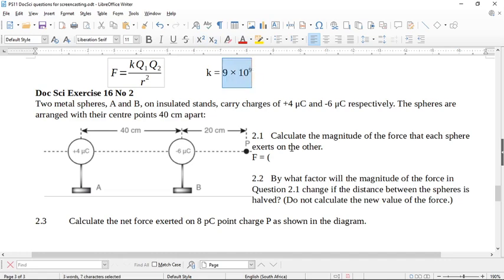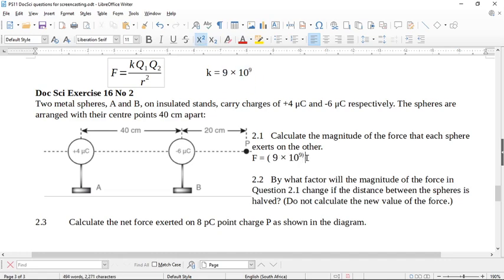Let's put in K, F equals K, and then Q1. Q1 is going to be 4 microcoulombs. So this is going to be 4 times 10 to the negative 6. I'm not putting the power in. Live with it. And then times 6 times 10 to the negative 6.